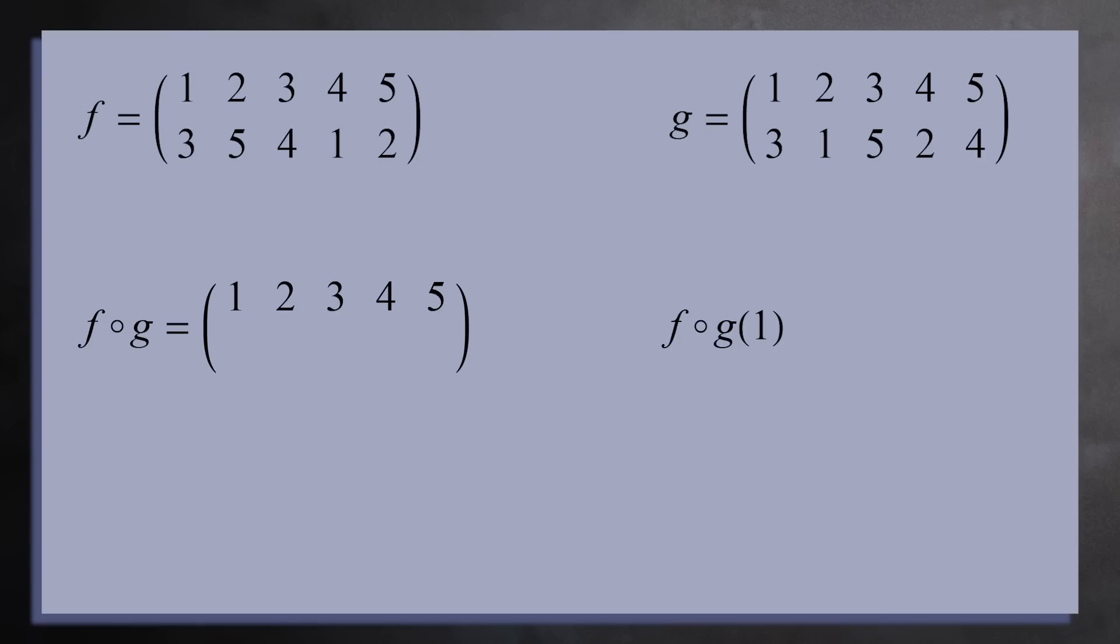If you plug in 1, you get f of g of 1. Now g sends 1 to 3, so this equals f of 3. And f sends 3 to 4, so in the product, 1 goes to 4. Next, f of g of 2 equals f of 1, which equals 3. So in the product, 2 goes to 3. If you do this for the remaining numbers, you get the permutation 4, 3, 2, 5, 1.